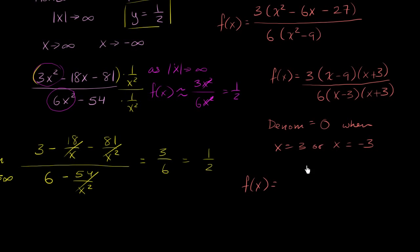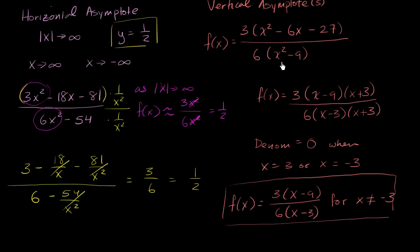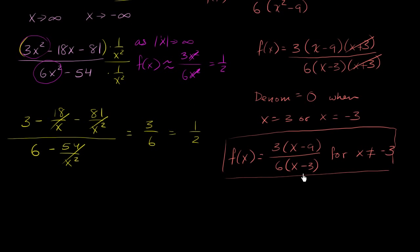So this exact same function equals 3(x minus 9) over 6(x minus 3), for x does not equal negative 3. Without that qualifier, the simplified expression would be defined at x equals negative 3, making it a different function. With the qualifier, x equals negative 3 is a point discontinuity, not a vertical asymptote.